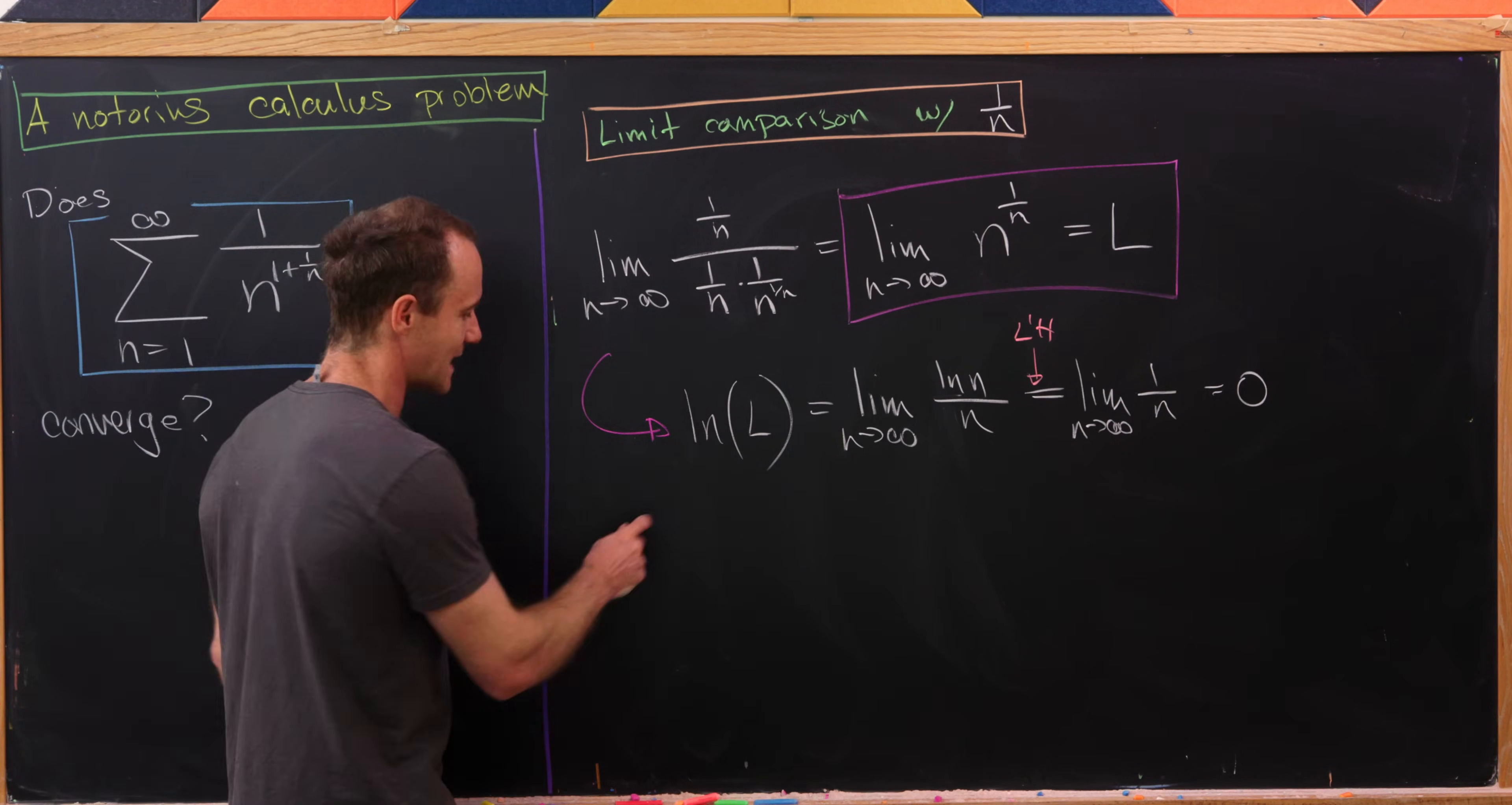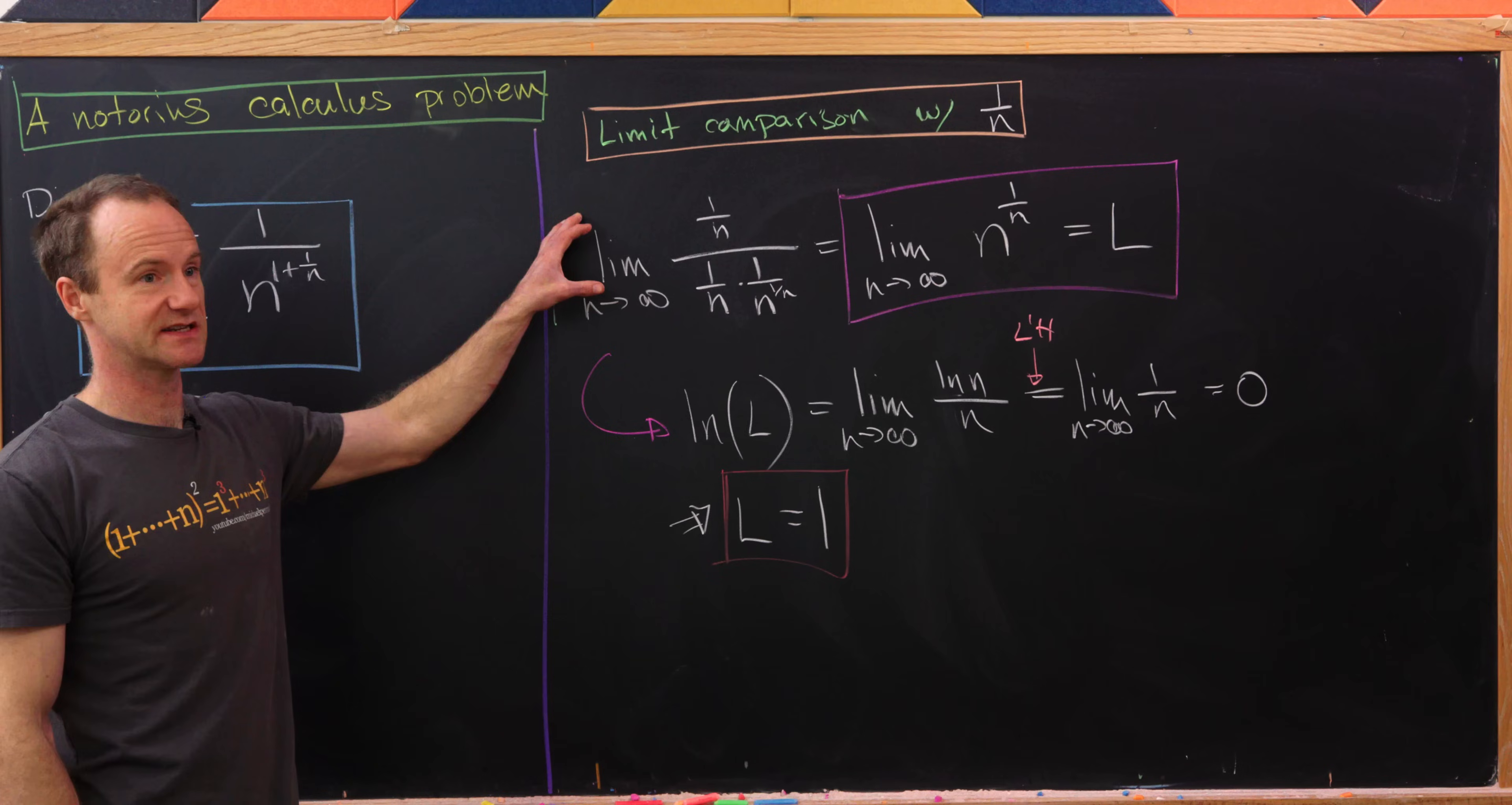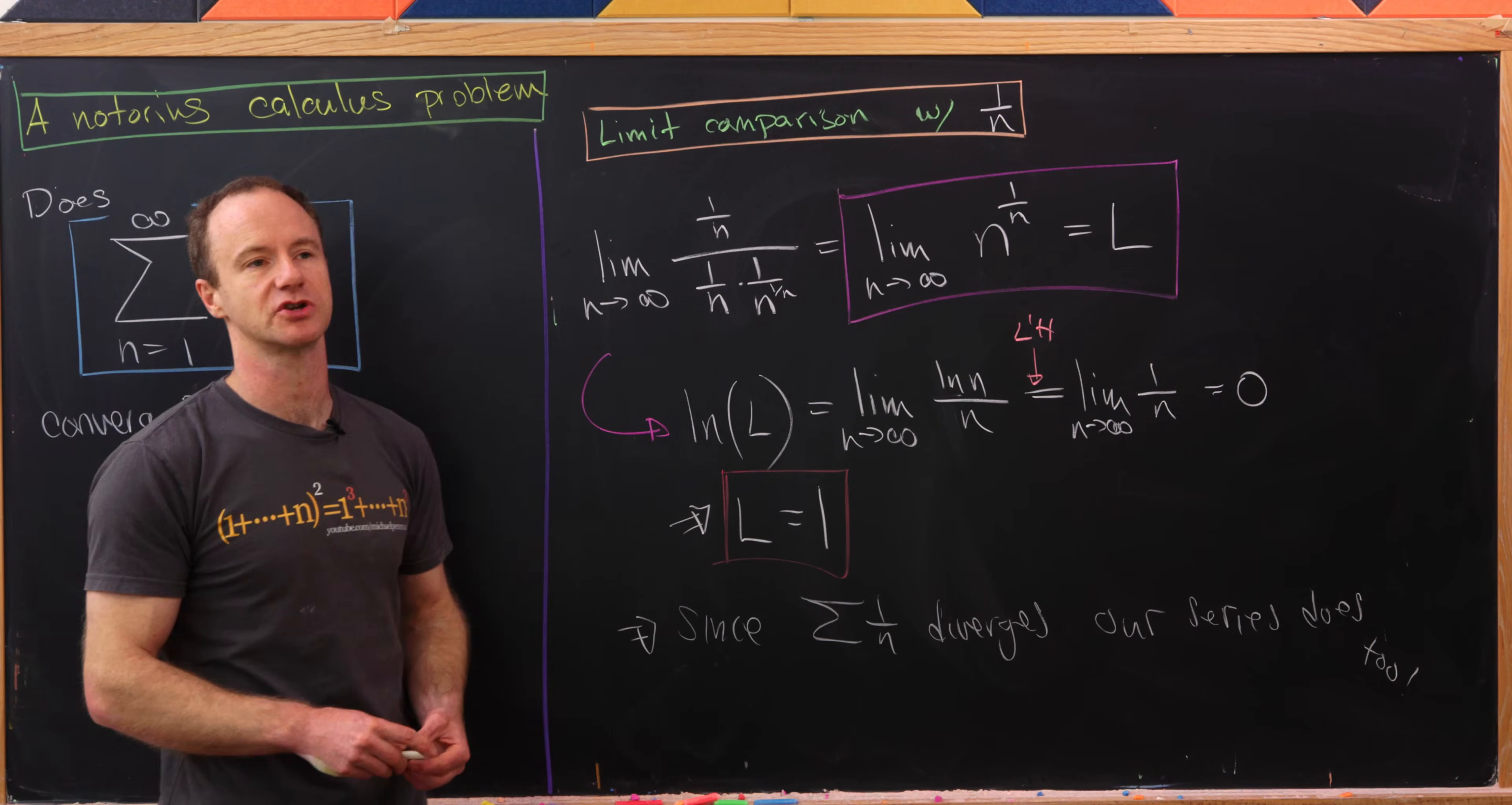But now if ln(L) is equal to 0, well what does that mean that L is? Exponentiating both sides, we have L is equal to 1. But now let's recall the statement of the limit comparison test, which says if this type of limit exists, is bigger than zero, and is finite, then the two series do the same thing. So since this satisfies these rules, we know that since the harmonic series diverges, our series diverges as well, and that's our second solution.